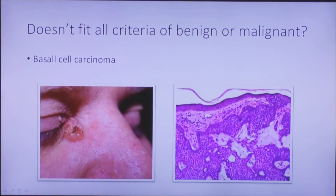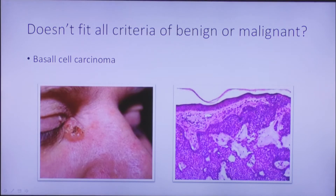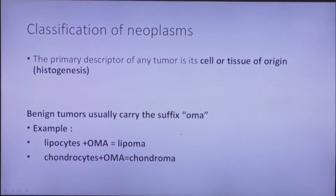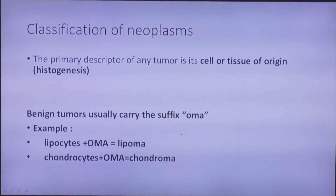A number of tumors are difficult to classify because they do not fit all the criteria for either benign or malignant neoplasm. The best known example is basal cell carcinoma of the skin, which is histologically malignant because it grows infiltratively, but it does not metastasize. The primary descriptor of any tumor — benign or malignant — is its cell or tissue of origin.